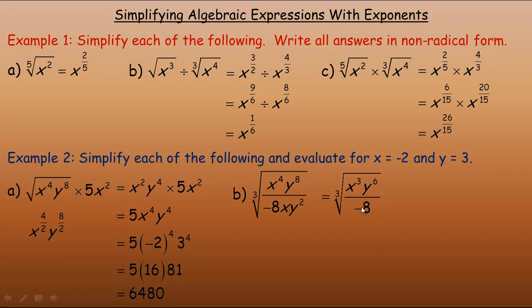And negative 8 actually is a perfect cube. The cube root of negative 8 is negative 2. And that's because negative 2 times negative 2 times negative 2, 3 of them, would equal negative 8. So 3 divided by 3 is 1. 6 divided by 3 is 2. And the cube root of negative 8 in the denominator is negative 2.